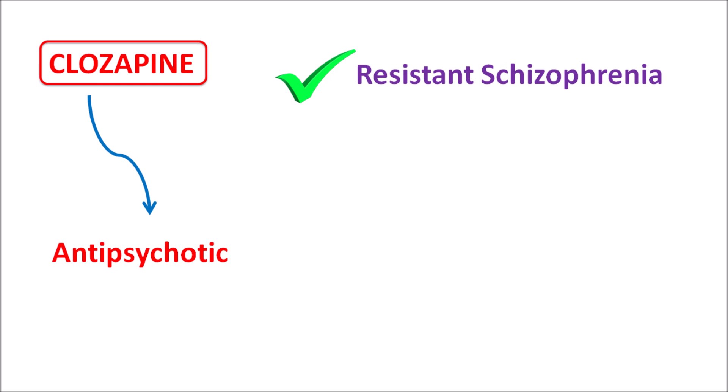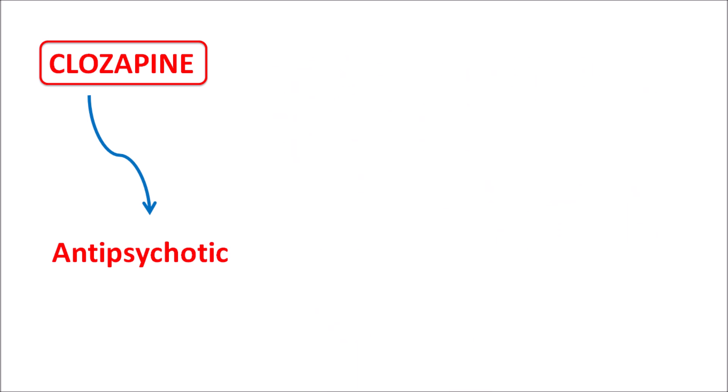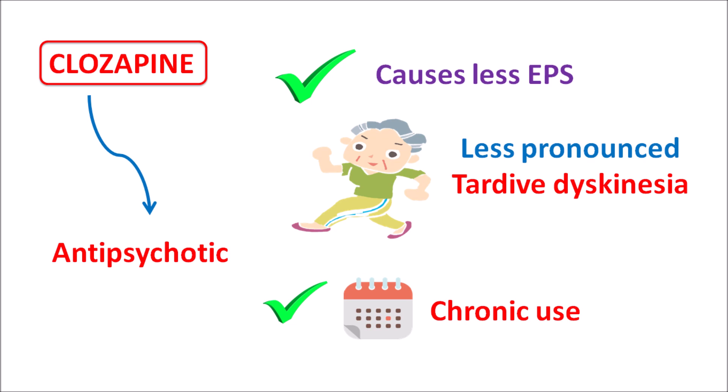Clozapine is also indicated for the treatment of resistant schizophrenia. This drug can reduce hospitalization and can be used for long-term treatment, reducing the number of attacks. Among the atypical antipsychotics, clozapine can reduce resistant psychosis. At the same time, this drug causes less extrapyramidal side effects. EPS is commonly observed with typical antipsychotics, but atypical antipsychotics can also produce EPS. Among extrapyramidal side effects, tardive dyskinesia involves reversible muscle spasm and involuntary movements, but with clozapine, tardive dyskinesia is less pronounced, so this drug can be used long-term without producing significant EPS.